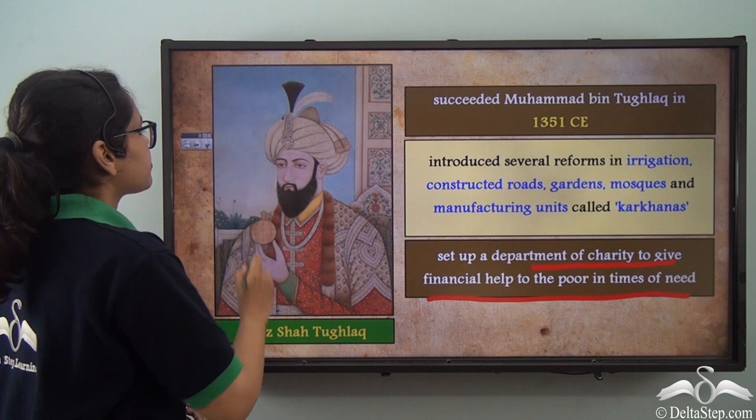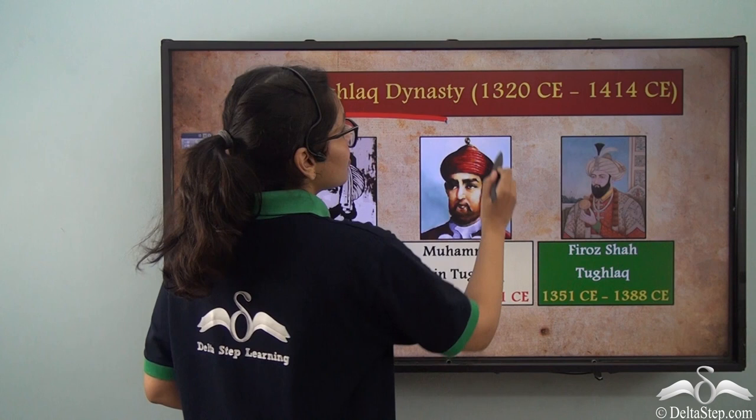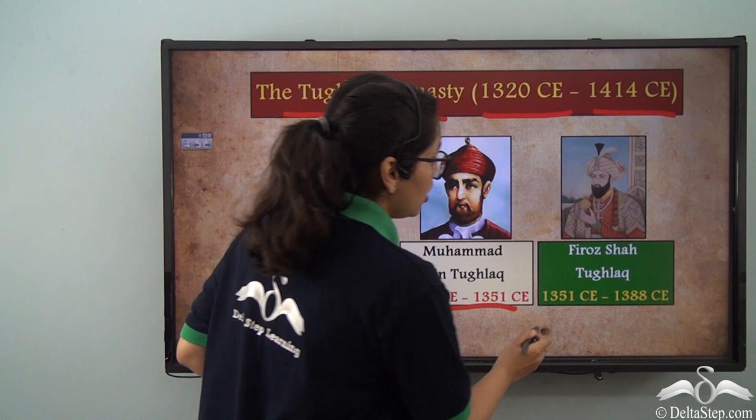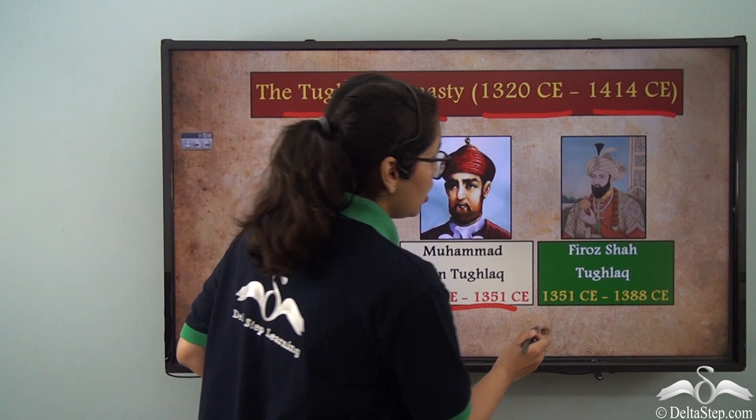With that, we come to an end of the Tughlaq dynasty, which lasted from 1320 CE to 1414 CE. It was started by Ghyasuddin Tughlaq in 1320, after which Muhammad bin Tughlaq came to power, and finally Feroz Shah Tughlaq was the last able ruler of this dynasty. The Tughlaq dynasty was then replaced by another dynasty of the Delhi Sultanate, which will be covered in the next video.